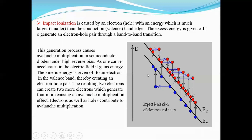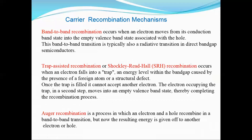As seen in the diagram showing the impact ionization of electrons and holes, one electron creates an electron-hole pair, giving two electrons, which create four electrons, which create eight electrons. This avalanche multiplication of charge carriers takes place, and this is called impact ionization.